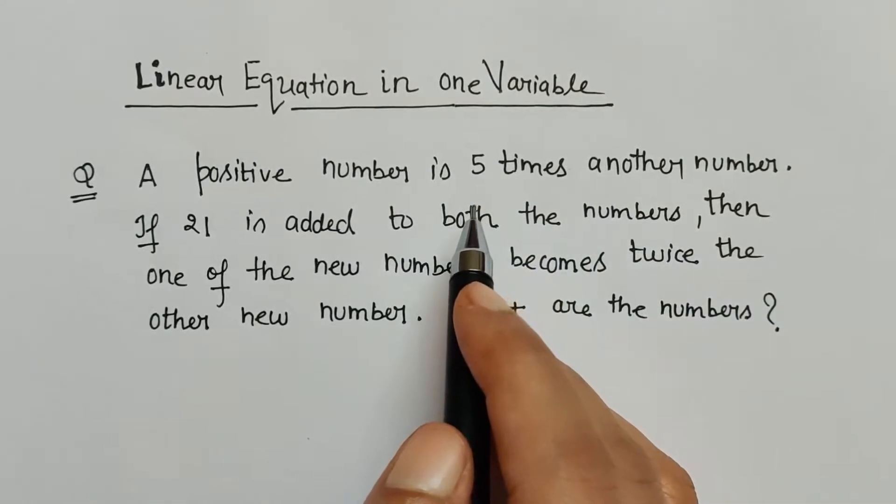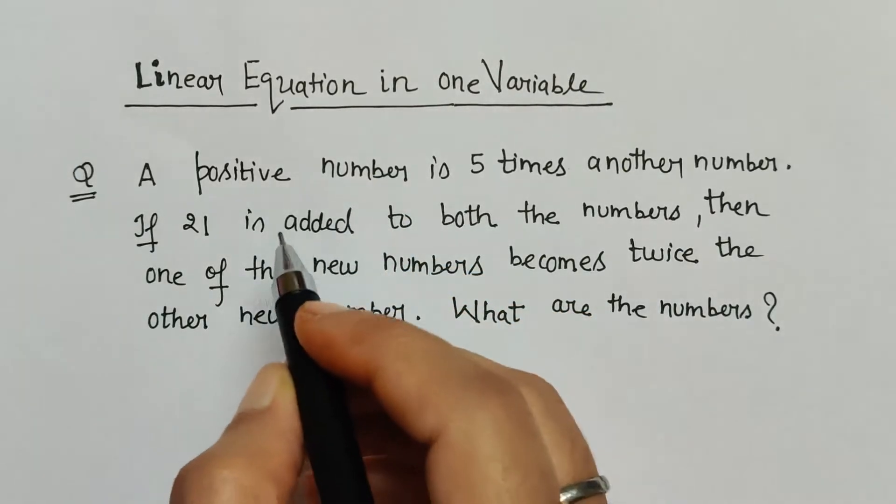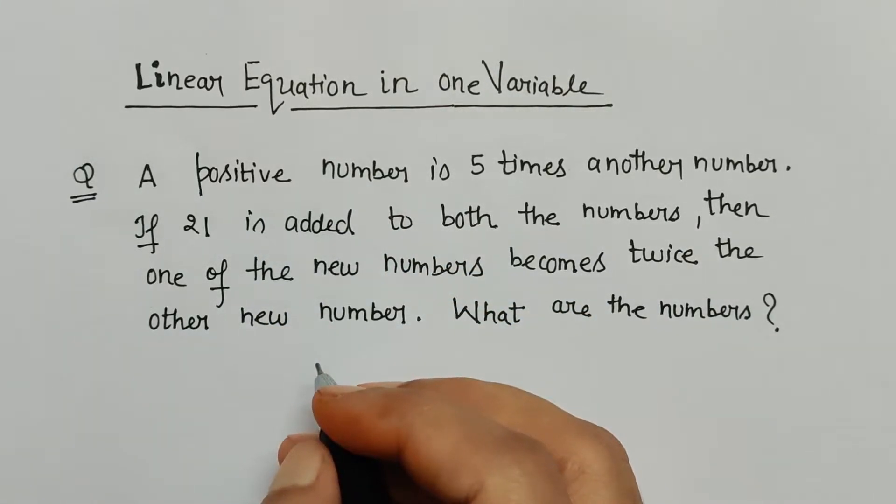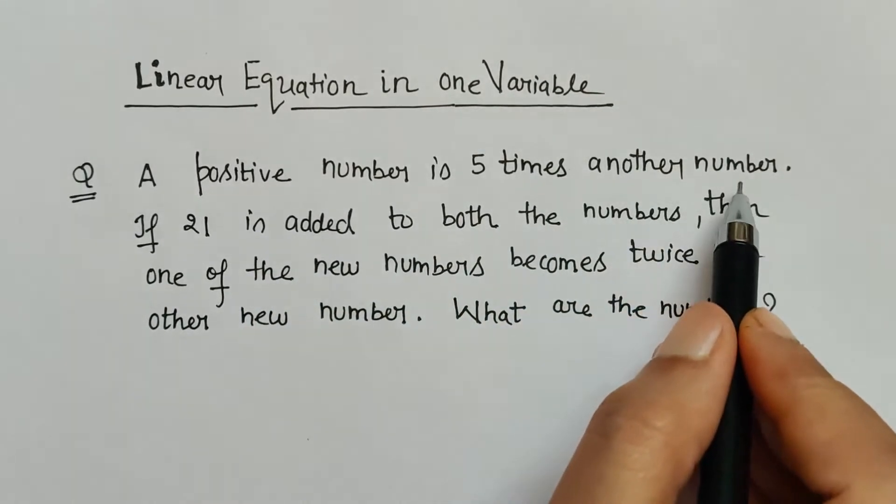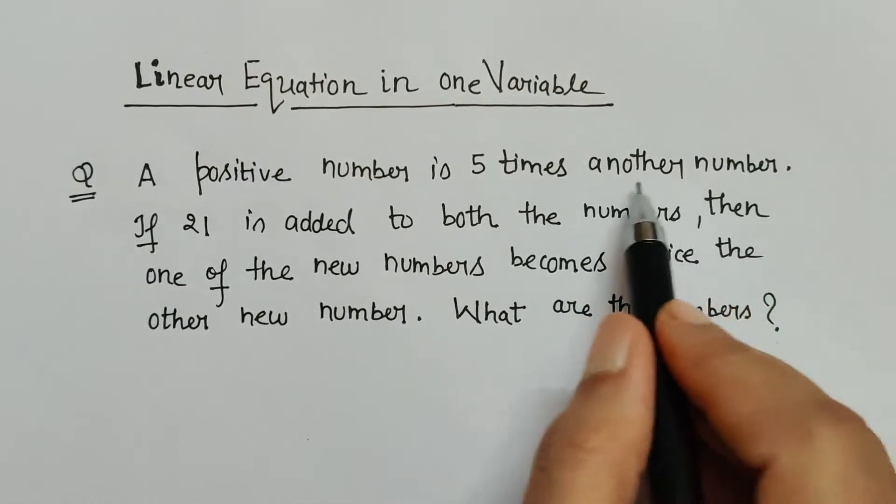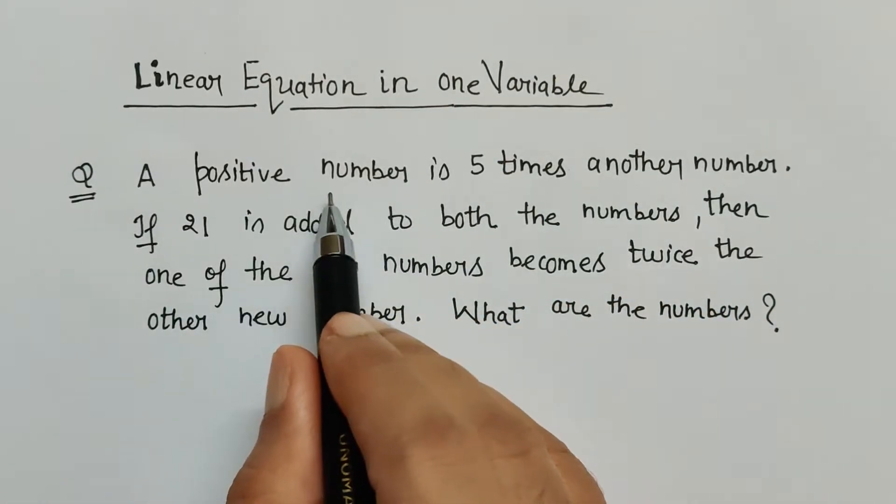So we will be assuming in that way. Let's assume the number having less value. A positive number is five times another number, that means that another number is the smaller number and a positive number is greater than that number.